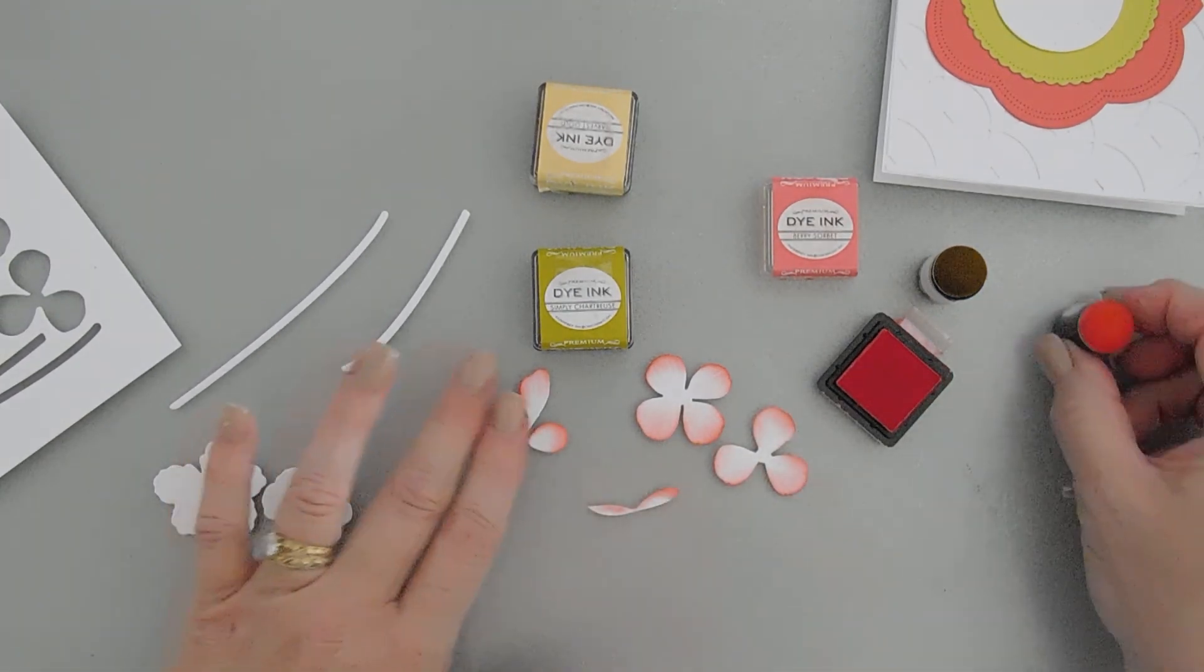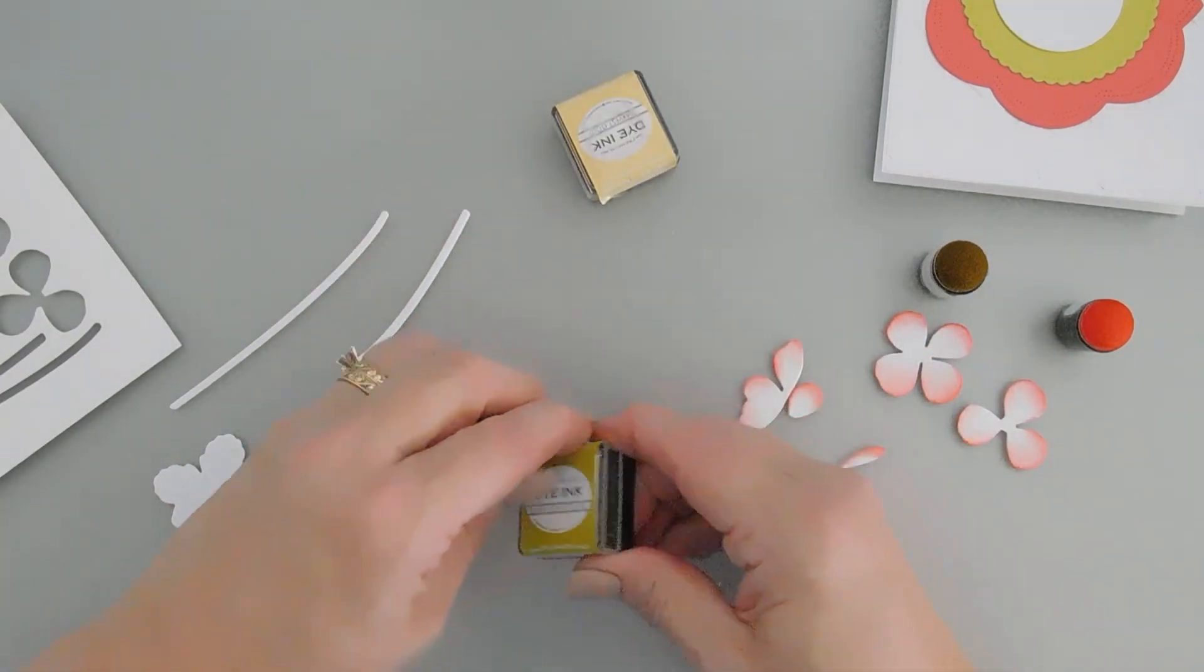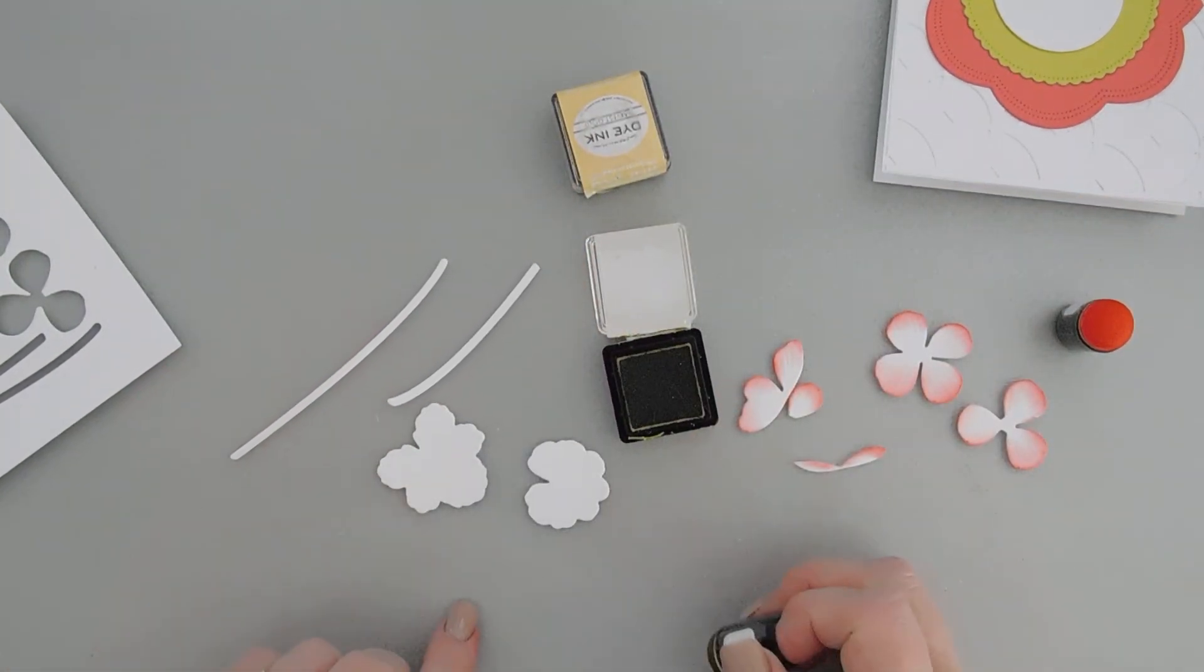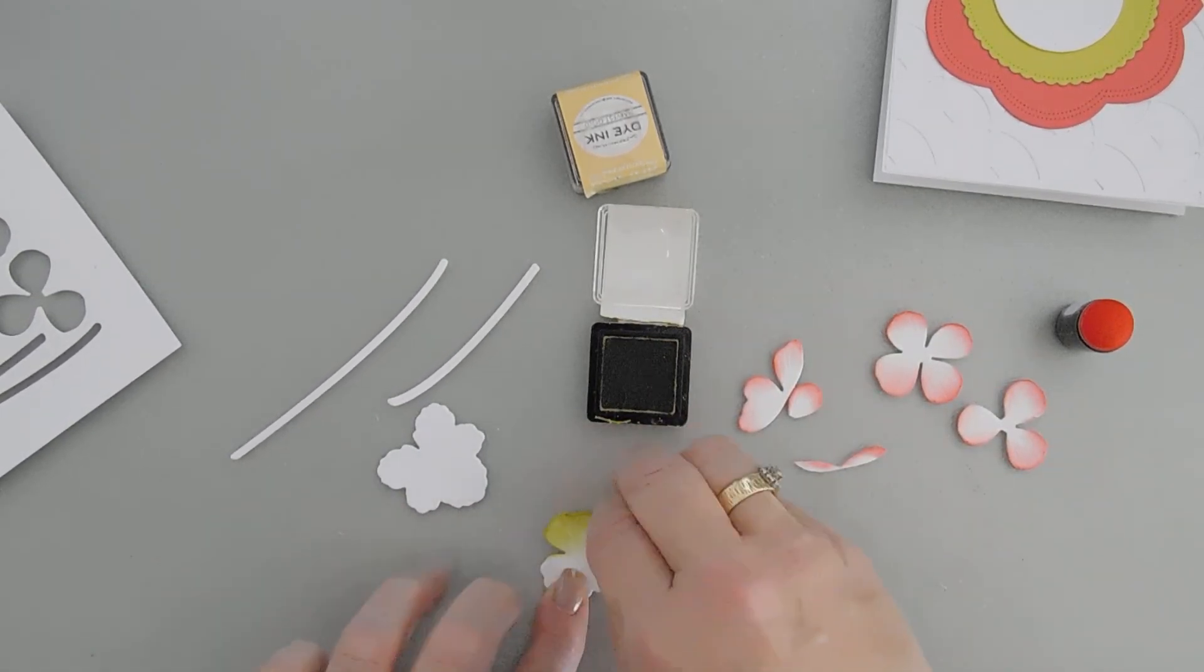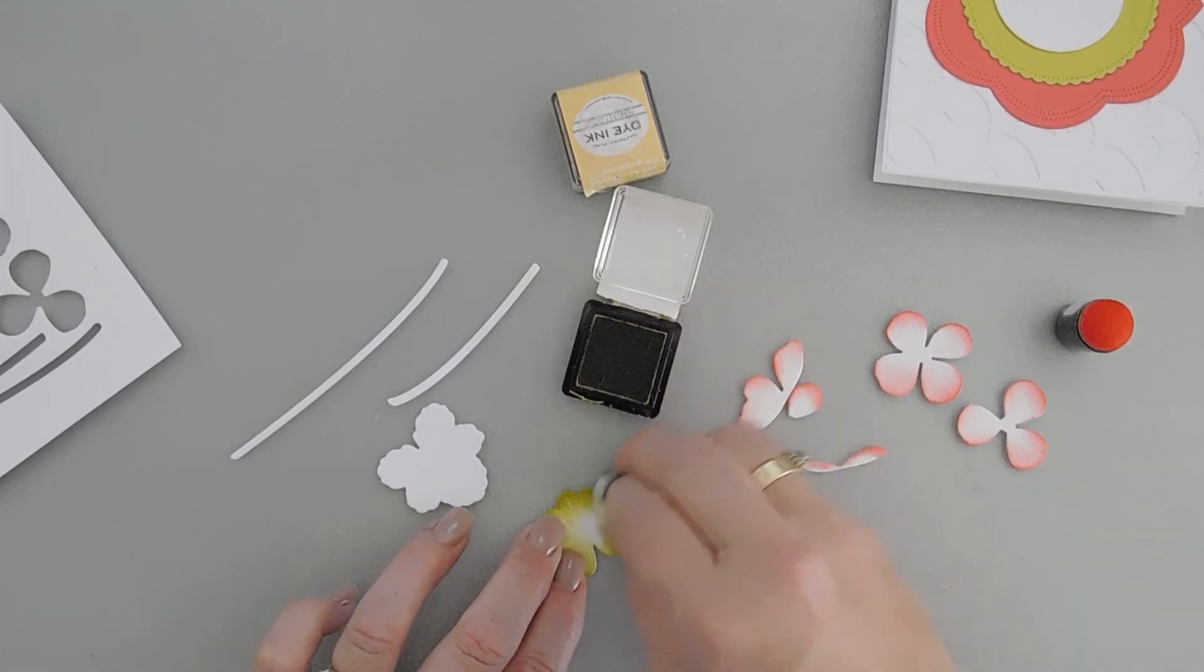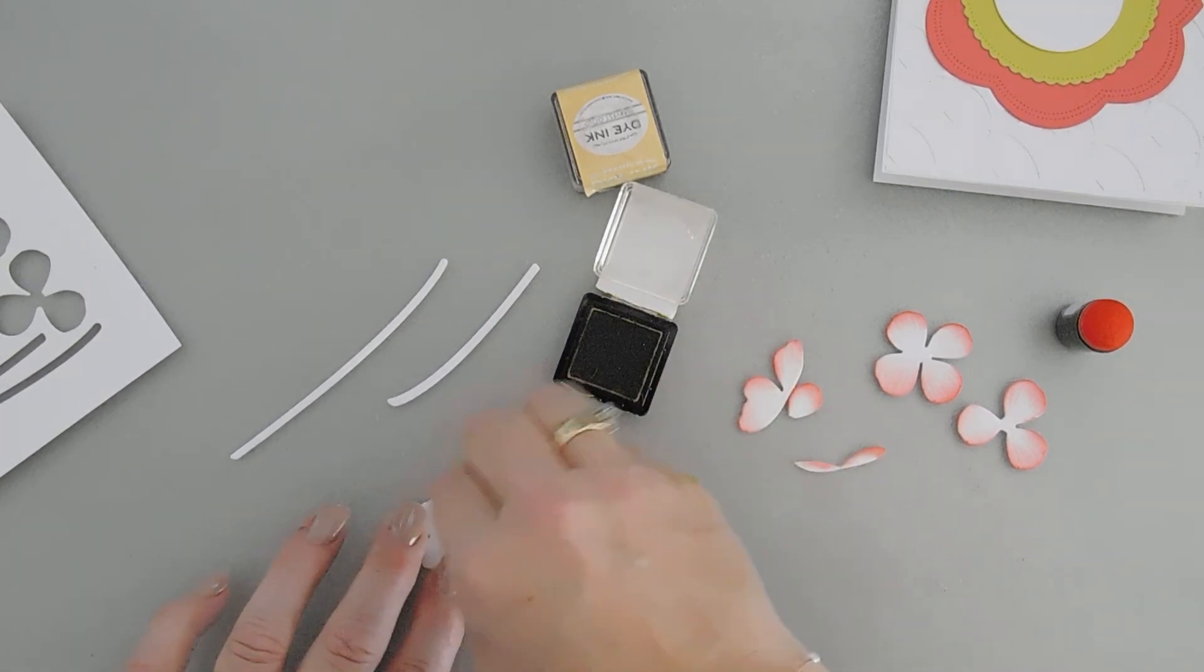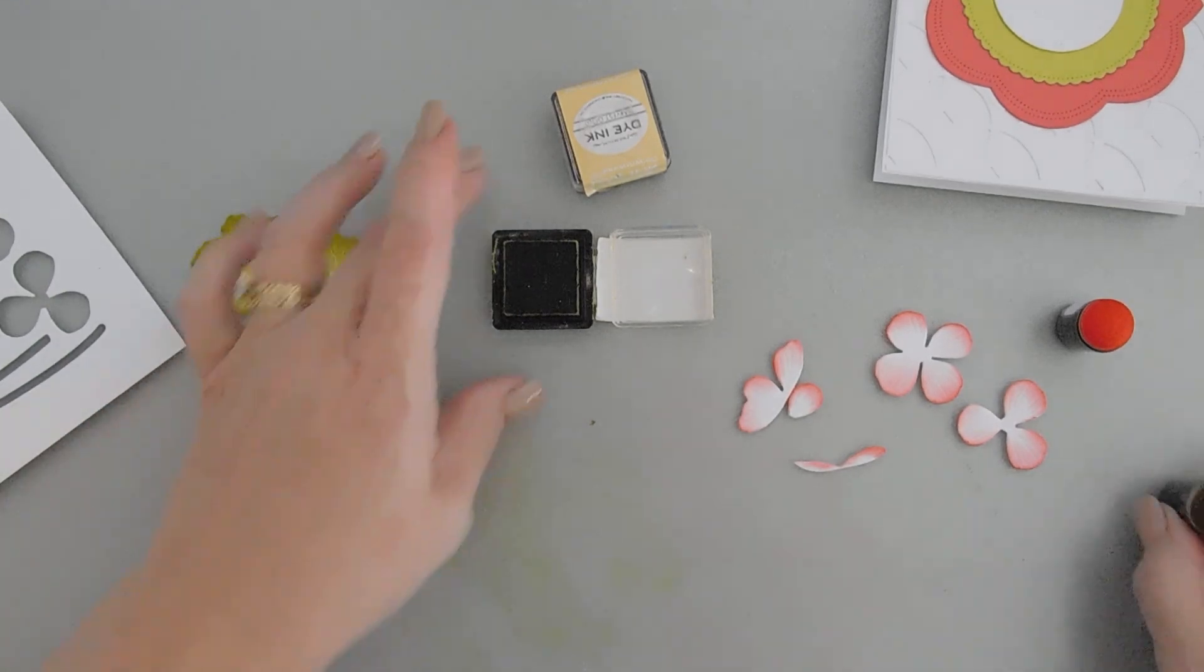So our flowers are done. We'll put this ink off to the side. And we're going to bring in our Simply Chartreuse. And then we're going to go over the stems and the leaves, doing the same thing. There is deboss detail in these, which is so pretty. And that's all there is to it.